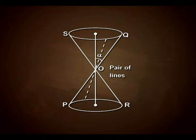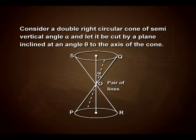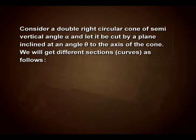We can see in the figure here the cones generated by the intersecting lines. We consider a double right circular cone of semi-vertical angle alpha, and let it be cut by a plane inclined at an angle theta to the axis of the cone. We will get different sections, that is, curves, as follows.